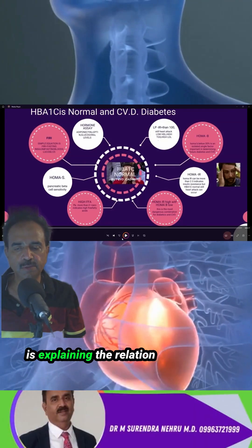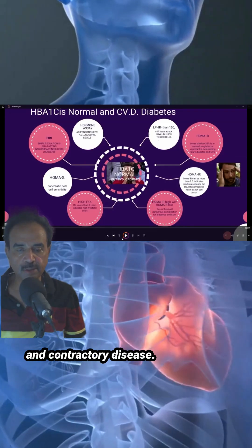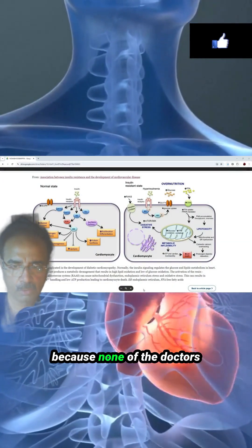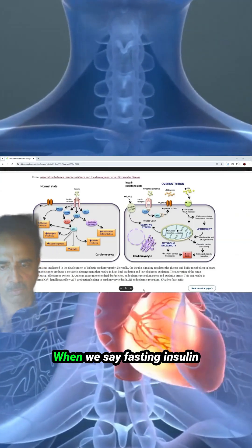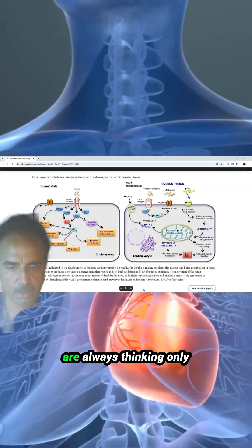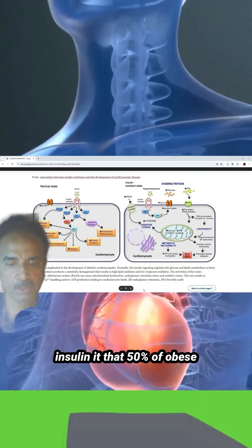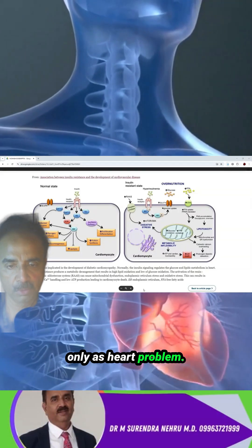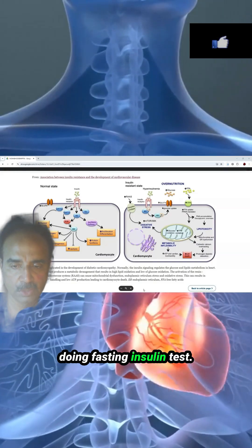This slide explains the relation between insulin resistance and cardiovascular disease. This is very important because none of the doctors are doing fasting insulin tests in heart patients. When we mention fasting insulin and IR, people are always thinking only about diabetes. But it is not just about glucose or insulin — 50% of obese patients present only with heart problems and never develop diabetes. So none of the doctors are doing fasting insulin tests.